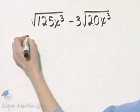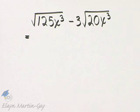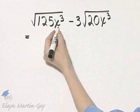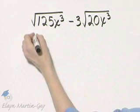For example, let's simplify this first radical expression. We're looking for any perfect square factors of 125 and any perfect square factors of x cubed.